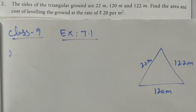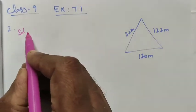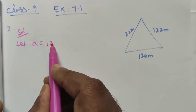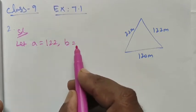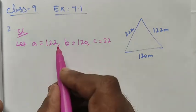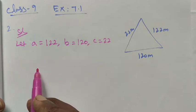Solution: Let me take the given sides as A equals 122, B equals 120, and C equals 22 meters. All are in meters.